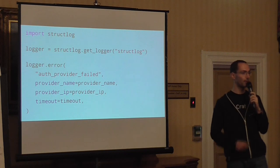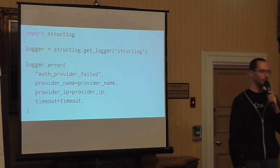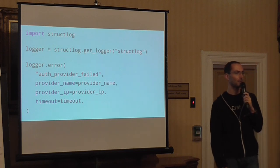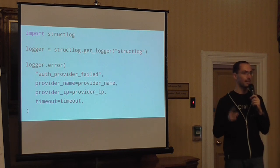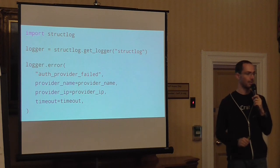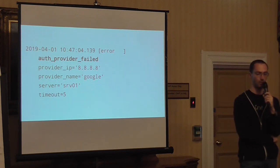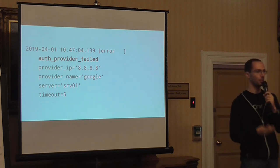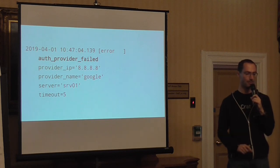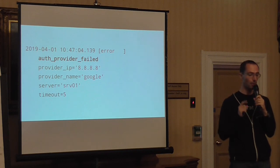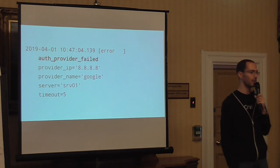When you look at this code compared to the previous one, it's pretty much exactly the same. The only difference is that structlog uses an underscore and lowercase 'l' because the Python logging library was derived from the Java library, though structlog has an alias supporting uppercase 'L' as well. When you log this, you get output in a console or wherever you log to that still contains the same information: the authentication provider failed, it's an error, you get a timestamp, a server, the IP of the provider, the name, the timeout, and whatever additional information you need.